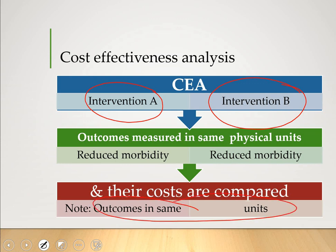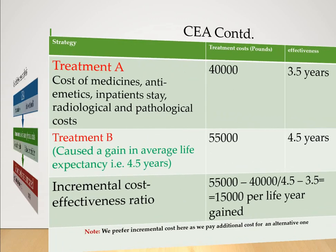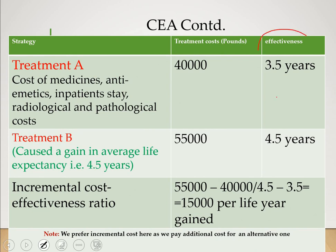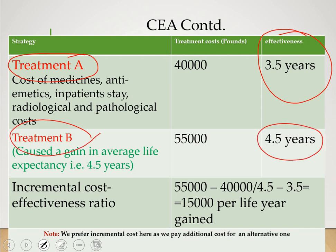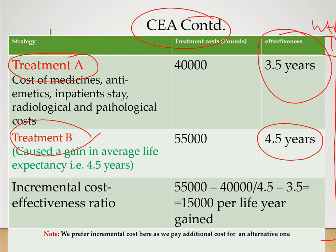That was just to refresh your previous knowledge. We gave an example where the effectiveness of treatment modality A and treatment modality B is compared — effectiveness meaning life expectancy gains per year, as discussed in the previous lecture. Now, if we insert another column using the concept of utility, that will be cost utility analysis.